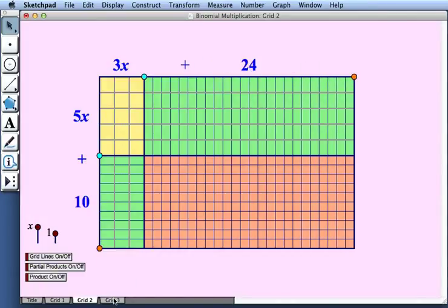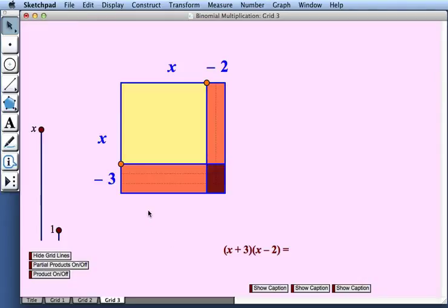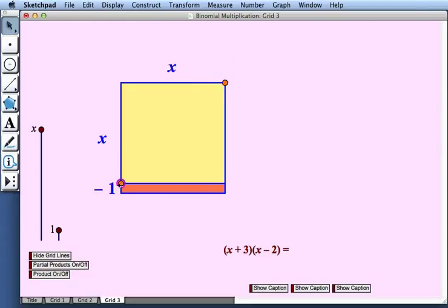Now our third model which is the beginning of our second activity, that model looks at algebra tiles with negative areas. I'm just going to return our model here to show a single algebra tile, an x by x tile with area x squared.